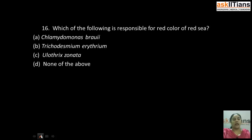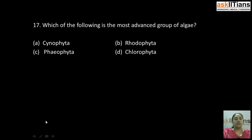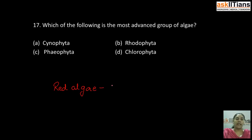Our next question is: which of the following is the most advanced group of algae? A) Cyanophyta, B) Trichodesmium erythraeum, C) Ulothrix zonata, D) none of the above. The correct answer is B: Trichodesmium erythraeum. Trichodesmium erythraeum contains a characteristic pigment that gives the Red Sea its color. Our next question is: which of the following is the most advanced group of algae? A) Cyanophyta, B) Rhodophyta, C) Phaeophyta, D) Chlorophyta. The correct answer is D: Rhodophyta.